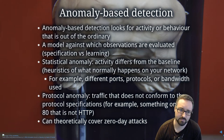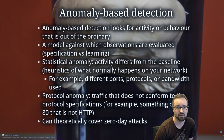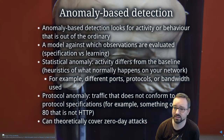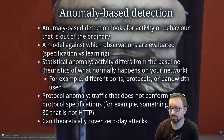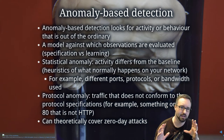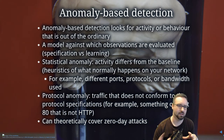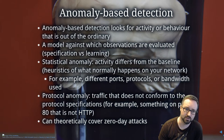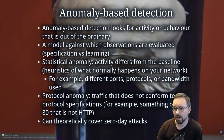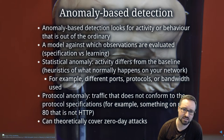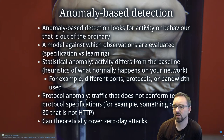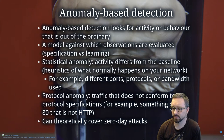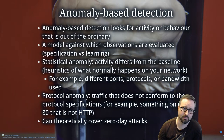An alternative approach is anomaly-based detection, where you look for activity or behavior that's out of the ordinary — when something happens that differs from what you'd expect, you trigger an alert. You need some kind of model against which observations are evaluated, which might be based on a specification or on learning done on your network traffic. It looks for statistical anomalies where activity differs from a baseline — for example, different ports, protocols, bandwidth used, or payloads that differ significantly from the past.